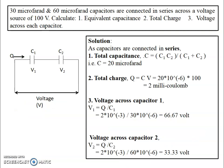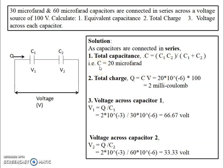Let's solve an example. We have two capacitors — 30 microfarad and 60 microfarad — connected in series across 100 volts. We need to calculate the equivalent capacitance, total charge, and voltage across each capacitor. For series connection, C = C1·C2/(C1+C2), so the equivalent capacitance works out to 20 microfarad. To calculate total charge, using Q = C×V, total charge turns out to be 2 millicoulombs.